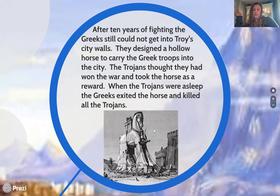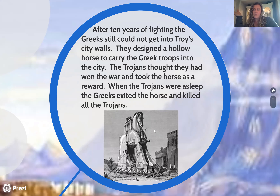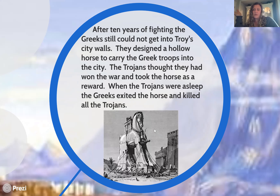After ten years of fighting, the Greeks were still not able to breach the walls of Troy. So they designed a hollow horse — the Trojan horse, as you can see in the picture. The Trojans thought they had won the war and accepted the horse as a peace offering. But the Greeks were hiding inside the horse, and that is how the Trojan War ends.